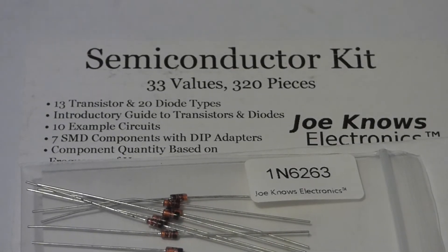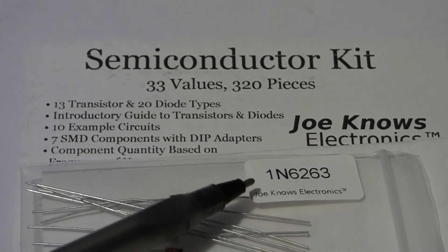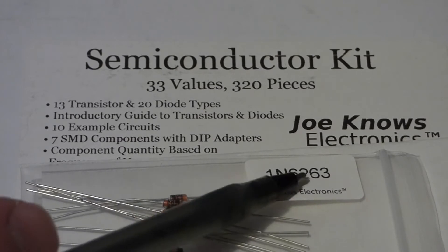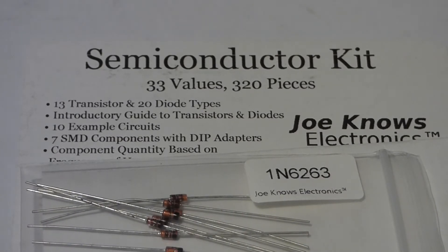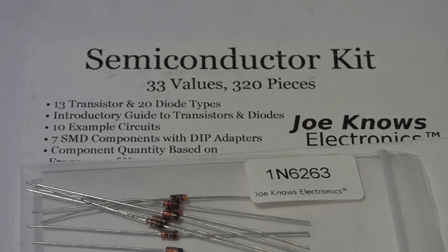So now in this video I'm going to go over the Schottky diode a little bit. This is the 1N6263. Schottky diodes are diodes like any other diode but with some special properties.